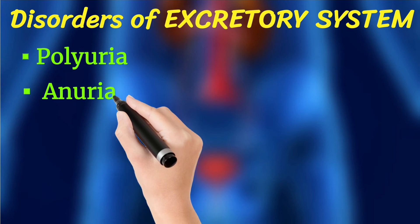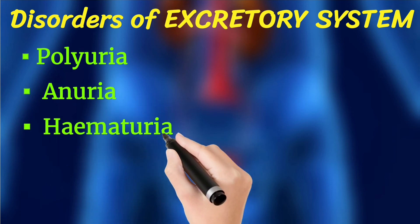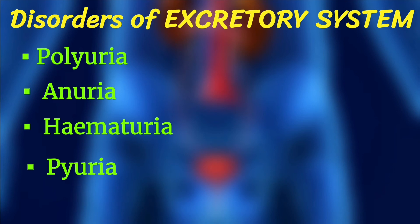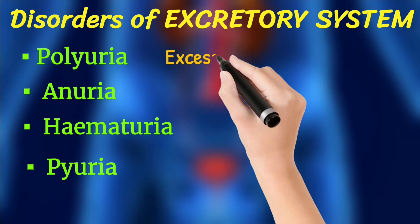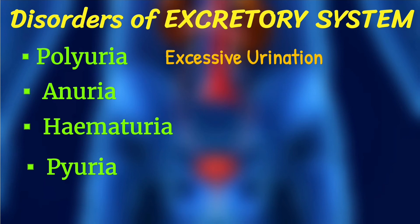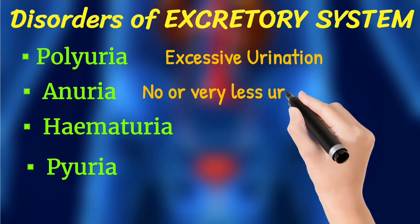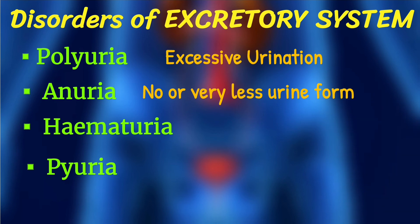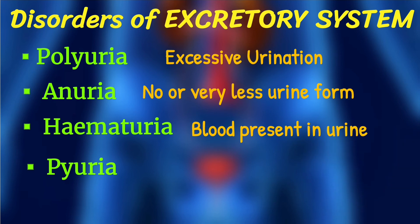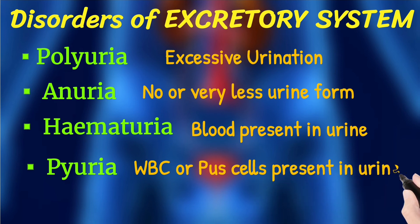There are a few additional disorders of the excretory system worth knowing: polyuria, anuria, hematuria, and pyuria. Polyuria means excessive urination — that is, a large amount of urine formation. Anuria means no or very little urine formation. Hematuria is a condition when there is blood present in the urine. And pyuria is a condition when white blood cells or pus cells are present in the urine.